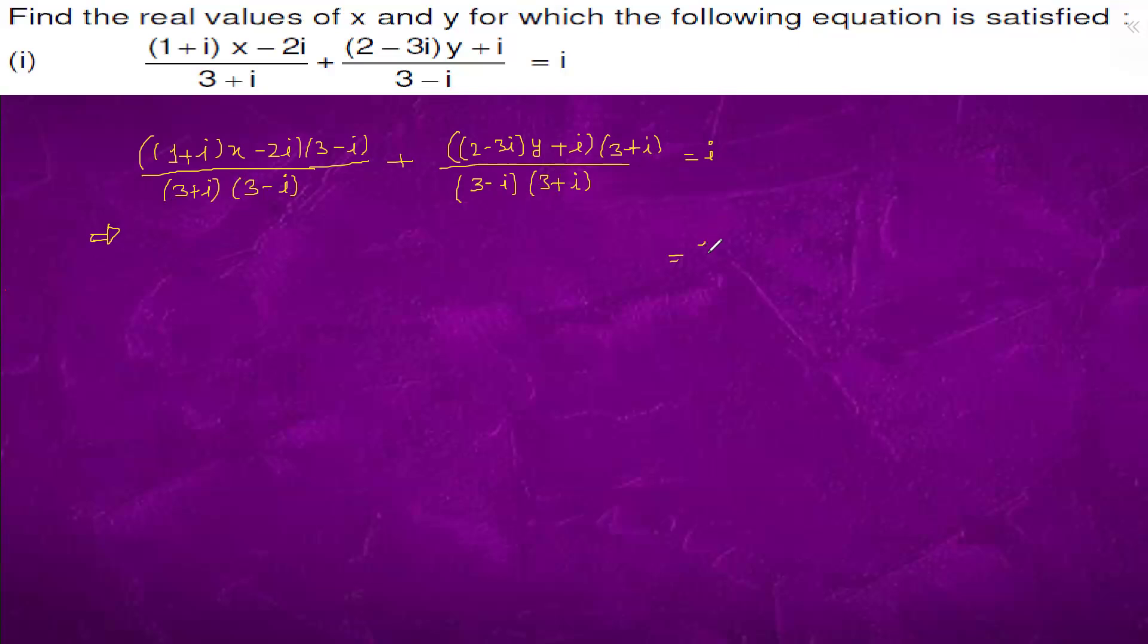So we will cross multiply by 10 and here we have 3x minus 6 iota minus iota x, so we have 2x minus 6.